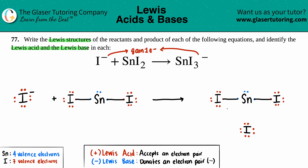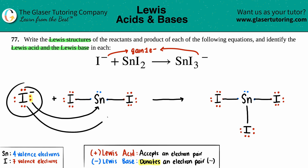Now we identify Lewis acid and base. The tin says it has no lone pairs to offer, but the iodine says that's okay because it has two electrons — a lone pair. Those two electrons from the iodine become the new bond between tin and iodine. The atom that donates the electron pair is the Lewis base, so iodine is the Lewis base, and tin is the Lewis acid.